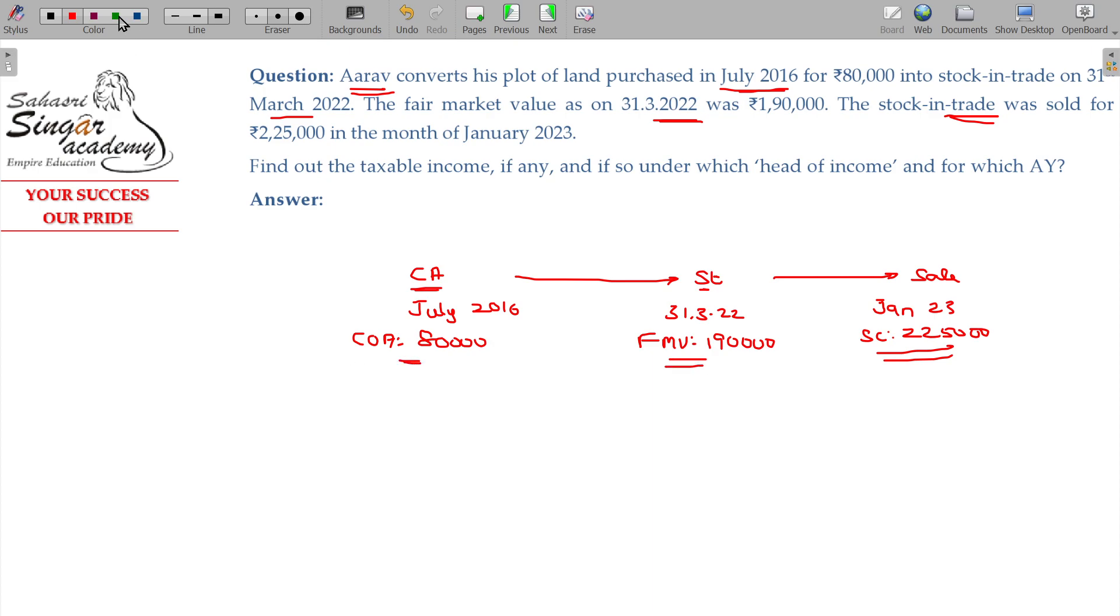The conversion creates capital gains, while the subsequent difference of Rs. 35,000 is Profit and Gains from Business or Profession (PGBP) income.